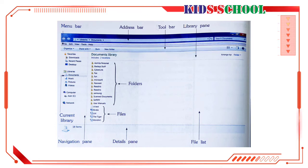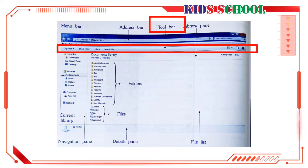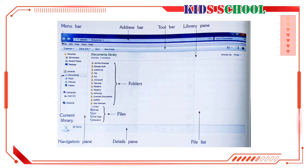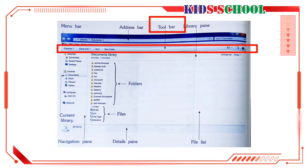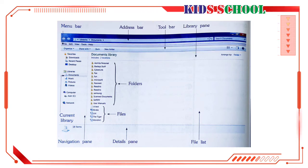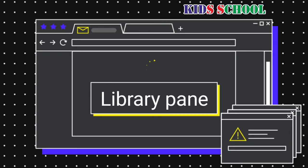Toolbar: Dear students, the toolbar is used to perform common tasks such as changing the appearance of files and folders, copying files to a CD, etc. The buttons on the toolbar will change according to the library that you have opened. In this picture, you can see tools that are useful in the Documents Library. If you open the Pictures, Music, or Videos Library, the buttons on the toolbar will be different.